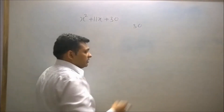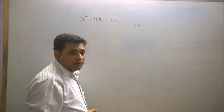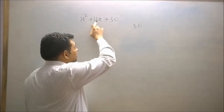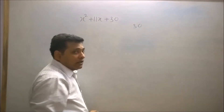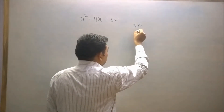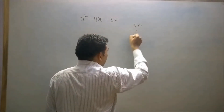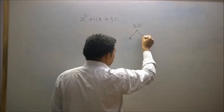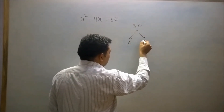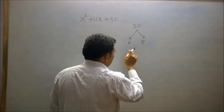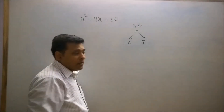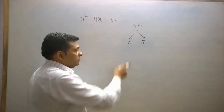Now break this number 30 into two parts such that their sum will be 11 and their product will be 30. So 30 can be factorized as 6 × 5 = 30, and the two factors are 6 and 5.